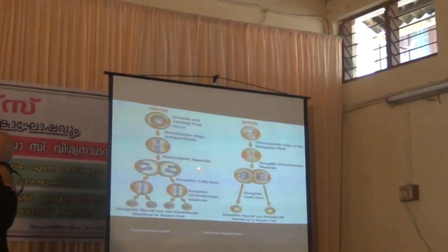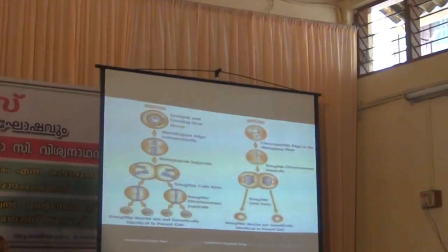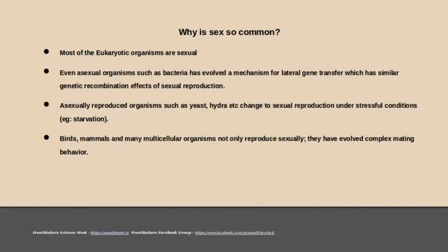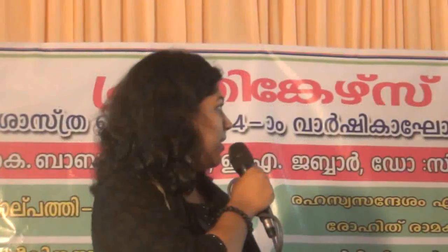The number of chromosomes are in 4 haploid cells. Why is sex so common? In eukaryotic organisms, one is sexually reproduced.